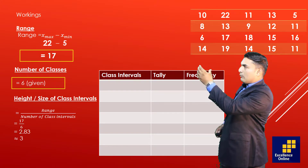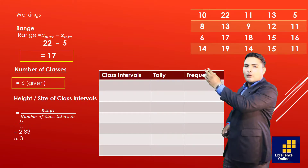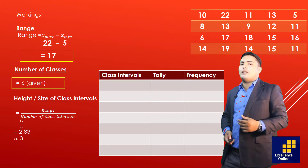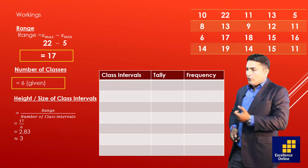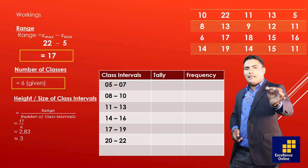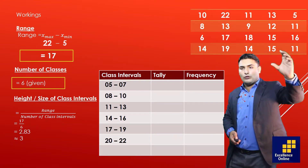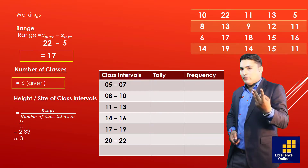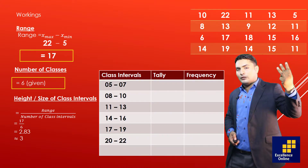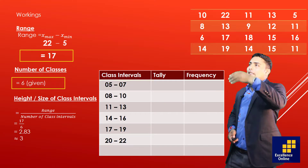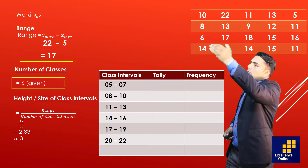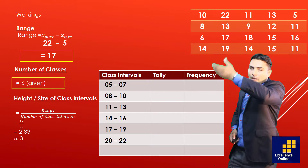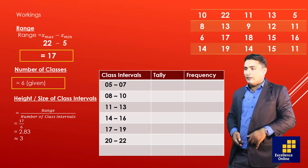अब एक table बनाया जाएगा जिसमें columns होंगे: class interval जिसमें groups mention होंगे, tally column ताके verify कर सकें कि सारी values आ रही हैं, और frequency column जो number of values को present करेगा। Class interval हमेशा minimum value से शुरू होगा। Minimum value 5 है, size 3 है, तो groups 5-7, फिर lower limit में size add करते जाएं: 5, 8, 11 and so on।